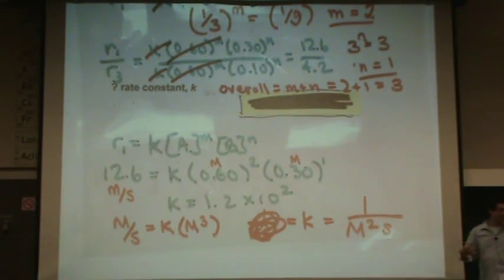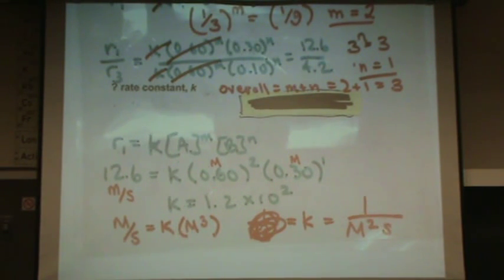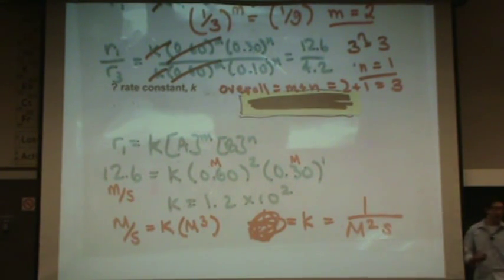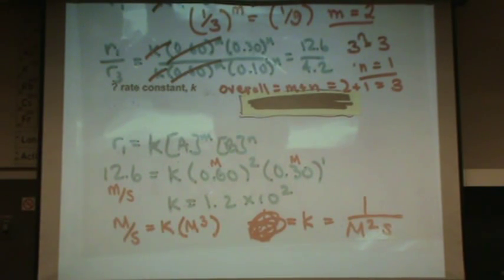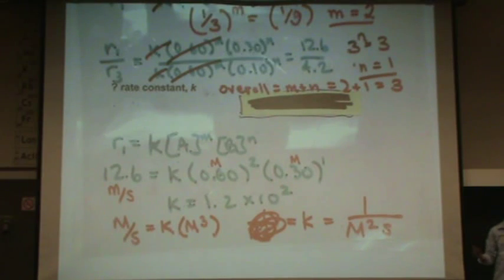Here's the deal with k — it's always going to have different units. That's why I never told you what the units are. The units will always depend on the order of reaction. This reaction has an overall order of 3, so it puts M squared in the denominator. It's always going to have really funky units, and they're always going to be different. You must always find the units of k for each problem that you're doing.